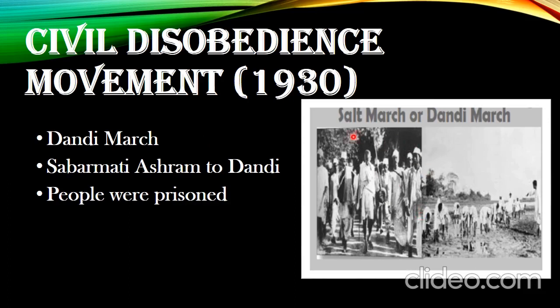Gandhi, along with thousands of disciples, walked from Sabarmati Ashram to Dandi. On April 6th, he started with 78 followers and ended with thousands and thousands of followers. Many people were arrested by the British for this activity, and finally they made the law.